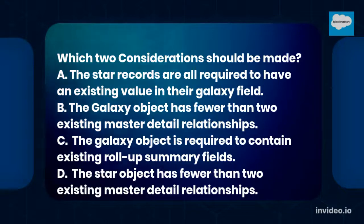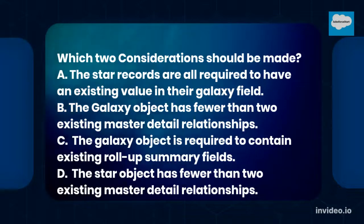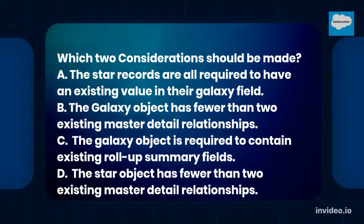A. The Star records are all required to have an existing value in their Galaxy field. B. The Galaxy object has fewer than two existing master-detail relationships. C. The Galaxy object is required to contain existing roll-up summary fields. D. The Star object has fewer than two existing master-detail relationships.